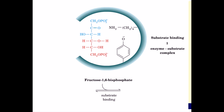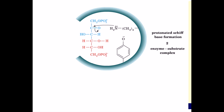This forms the enzyme-substrate complex. In step 2, the epsilon amino group of lysine attacks the carbonyl of the substrate, forming a protonated Schiff base with the loss of H2O.